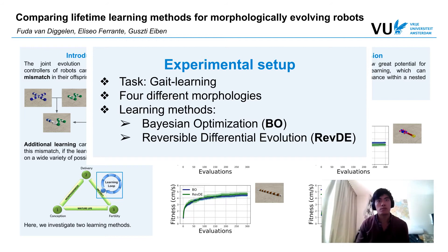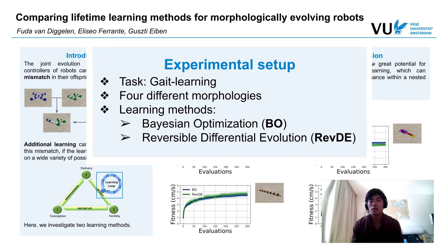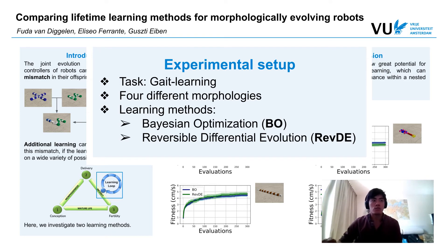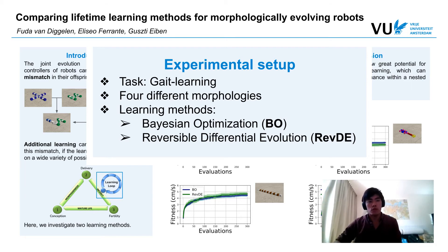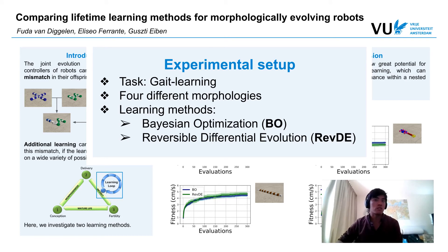In this paper, we tried to find a good learning algorithm for this, and we did this for the task of gait learning. We let our robots walk for 30 seconds and measured their fitness based on average speed. For this we selected four different morphologies that would elicit different behaviors, meaning the evaluation would not be biased against certain morphologies. The two algorithms we compared were Bayesian optimization and reversible differential evolution.